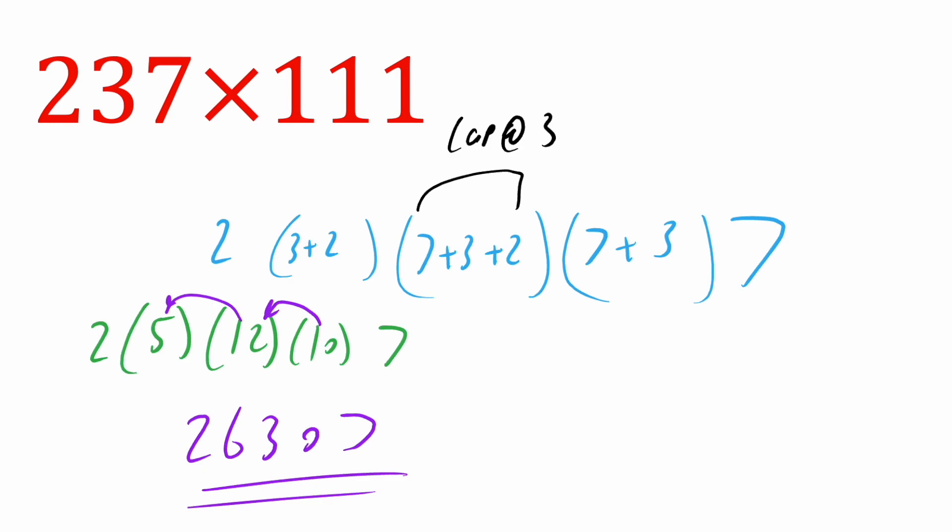I encourage you to use a calculator to verify it. Now we did a few interesting things, and I want you to be thinking about it because at the end, as a challenge, I want you to come up with why we're doing what we're doing. So this is the next problem — we have a three-digit number and we're multiplying it by 111.